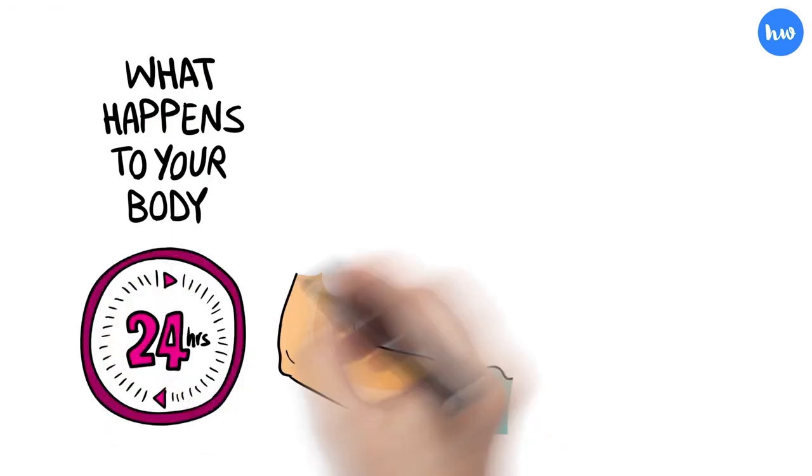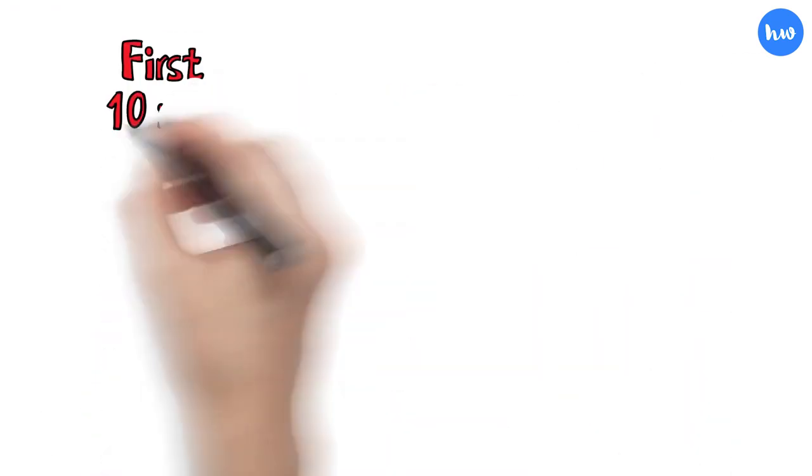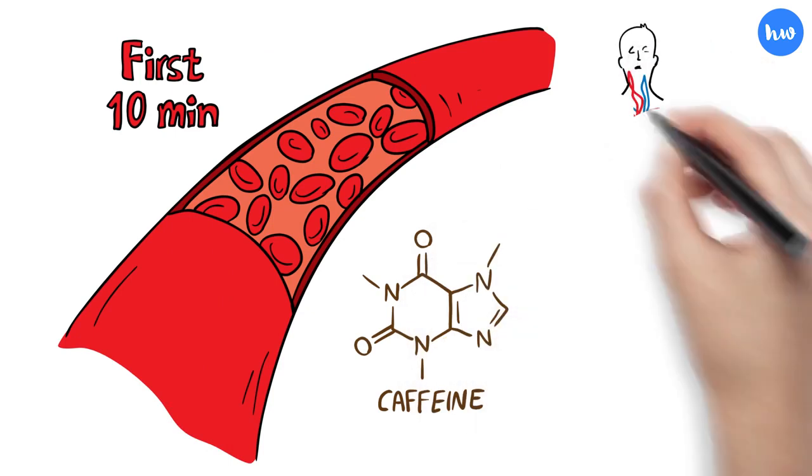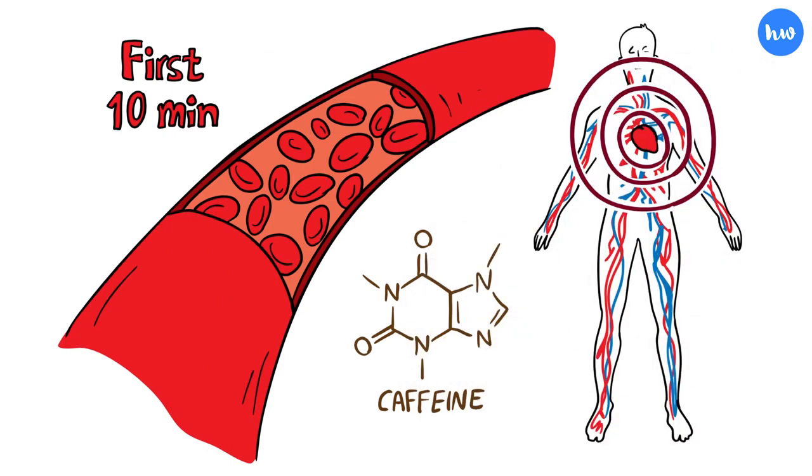Here's what happens to your body in 24 hours after guzzling an energy drink. In the first 10 minutes, the caffeine begins to be absorbed into the bloodstream, raising your heart rate and blood pressure.